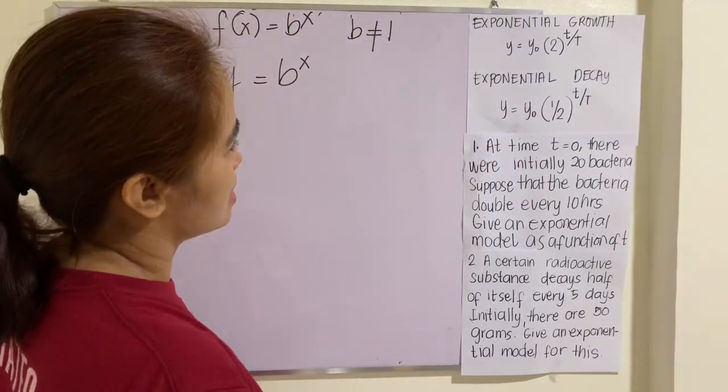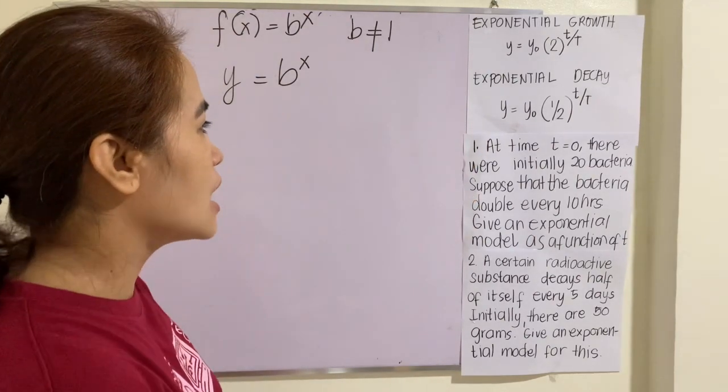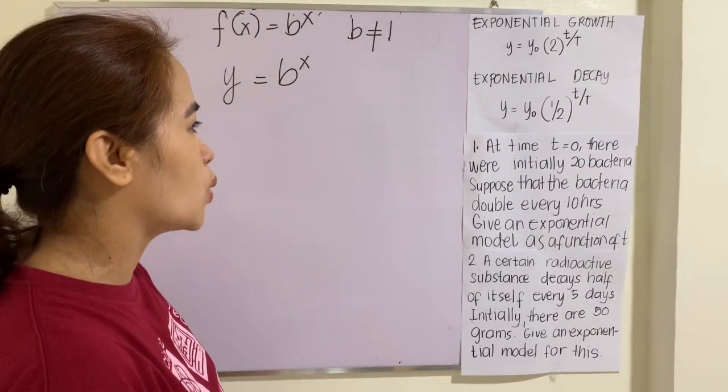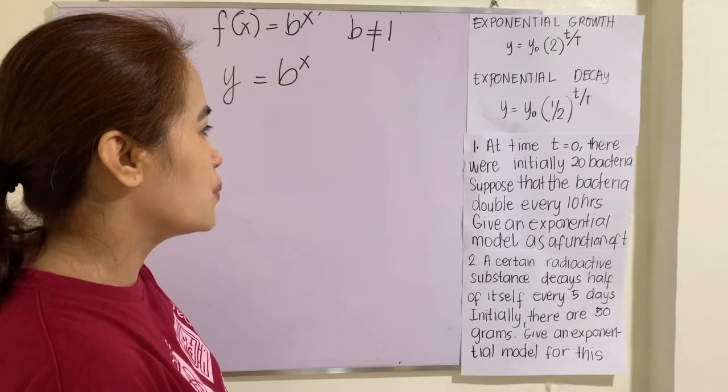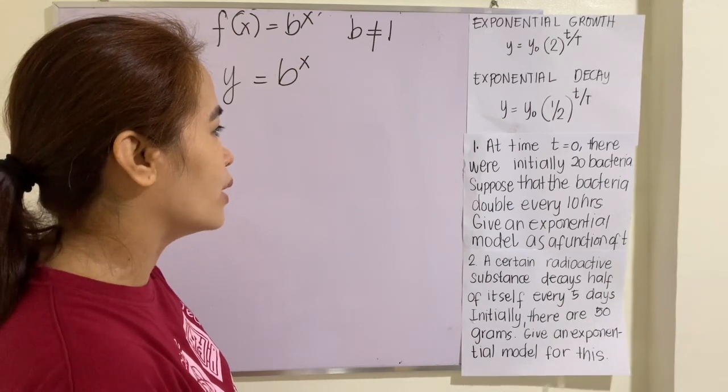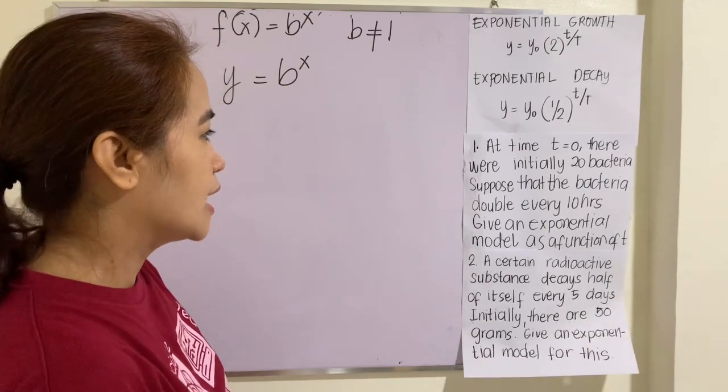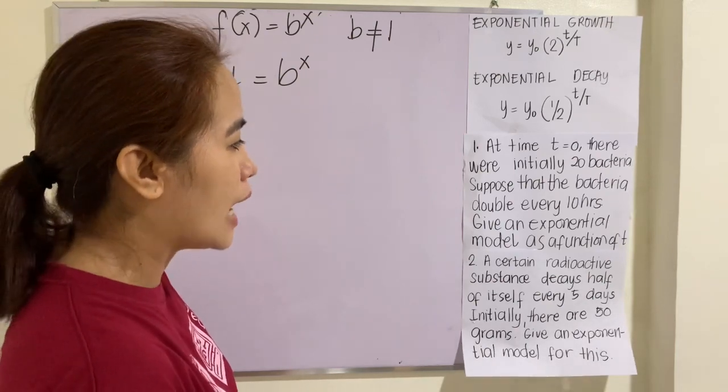Let's have these examples. Number one. At time t equals 0, there were initially 20 bacteria. Suppose that the bacteria double every 10 hours. Give an exponential model as a function of T.